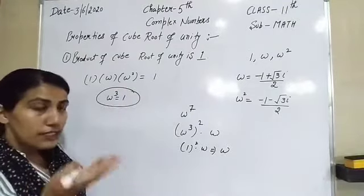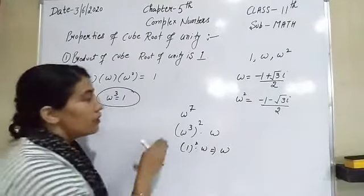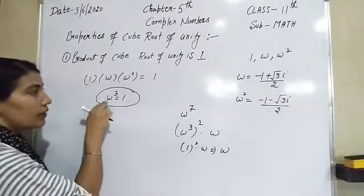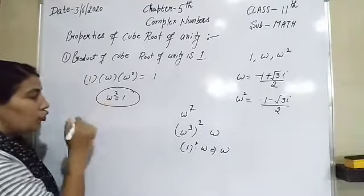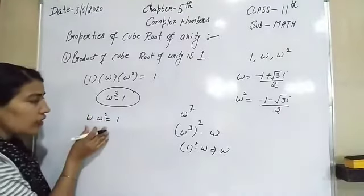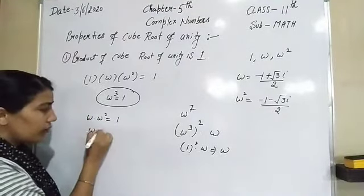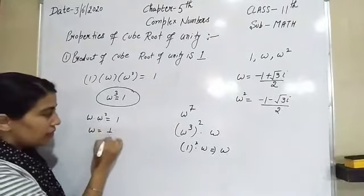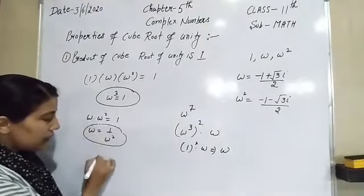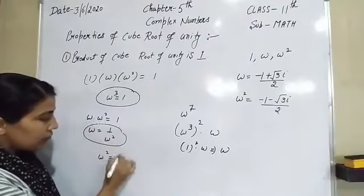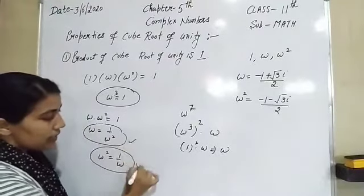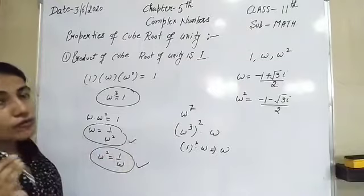From the product property, since ω × ω² = ω³ = 1, we can derive that ω = 1/ω² and similarly ω² = 1/ω. These results are also to be used in your worksheet.